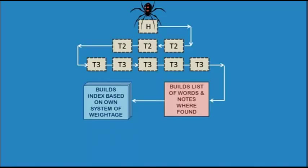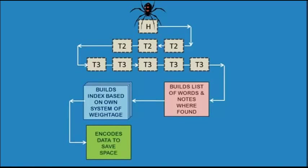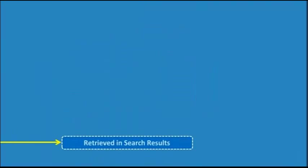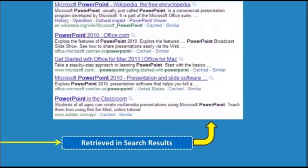Once the index building is over, the search engine encodes the data mainly to save server space and also for secrecy. Finally, the data is stored in a place that is accessed and retrieved by the search engine to show up in the search results in response to a search query by the user.